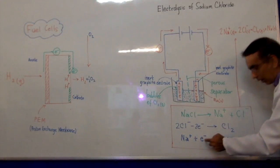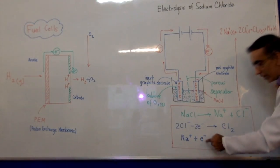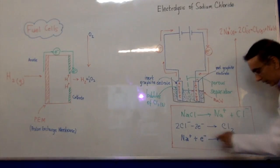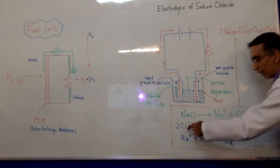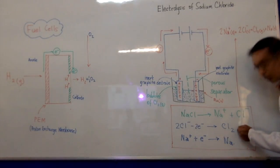That Na+ acquires an electron. Reduction is gain, so sodium is reduced. Sodium ions are reduced to liquid sodium. Chlorine ions lose electrons, so they are oxidized to chlorine gas.